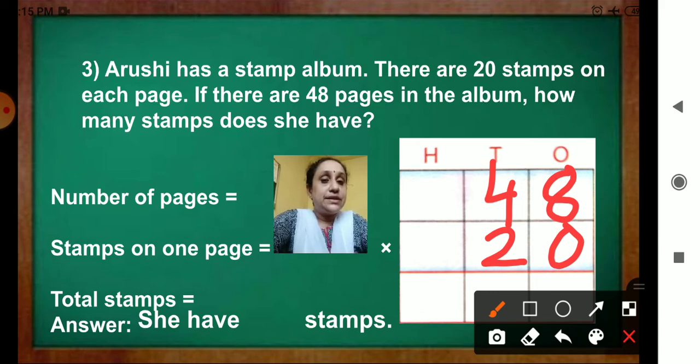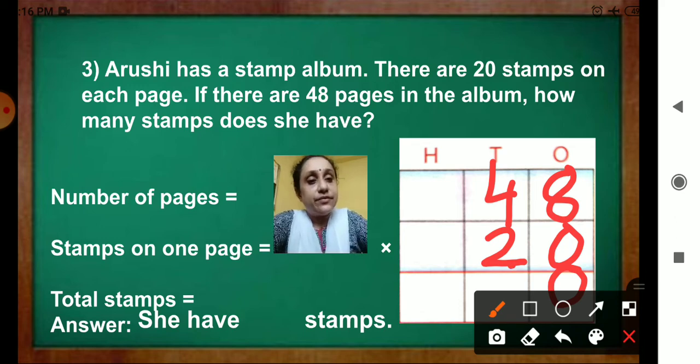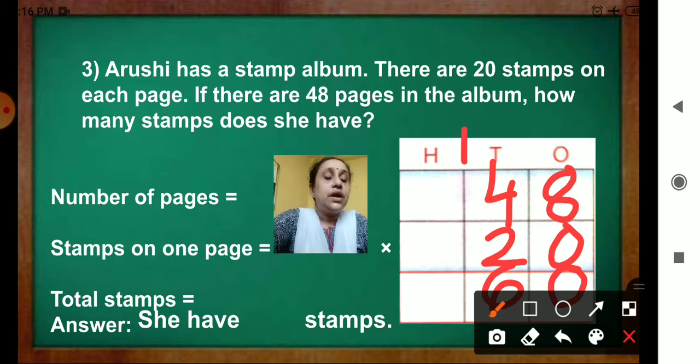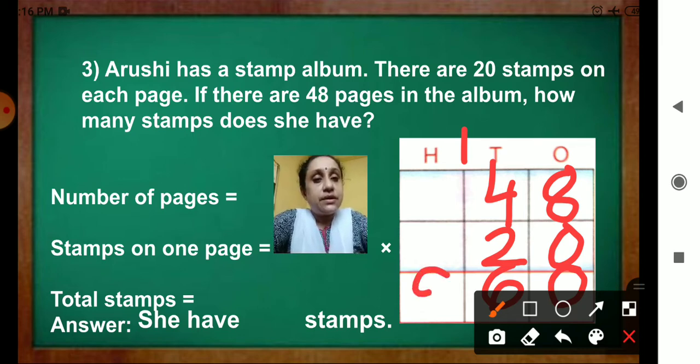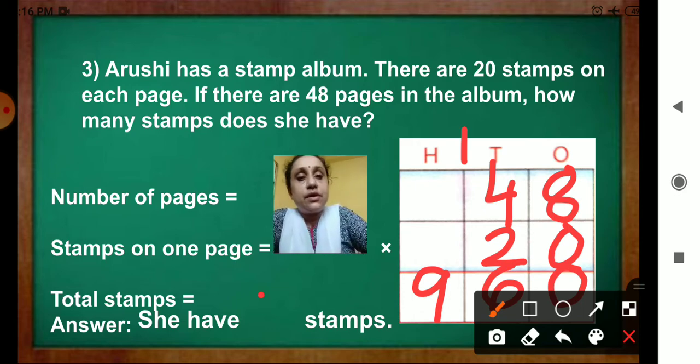Now what to write? How we will get the total stamps? We have done multiplied with 0. So we will write here. 1 zero is there. Let's write 0 here. Now we have to do 2 eights. How much? 16. Very good. Write 6 here. Carry over 1. Now 2 fours are 8. 8 plus 1? 9. Answer is she have 960 stamps.